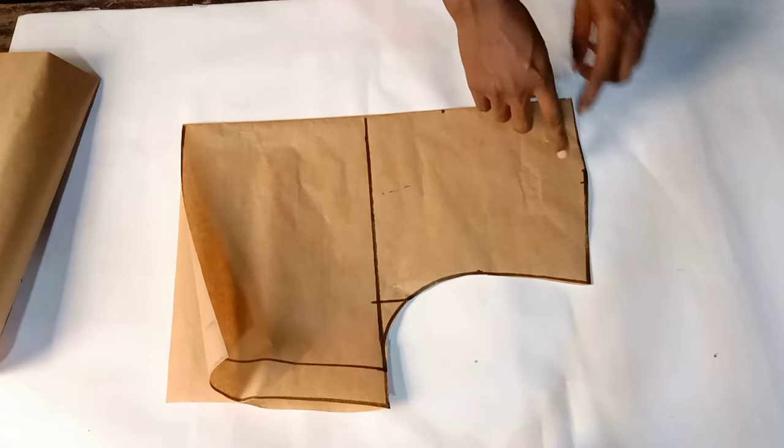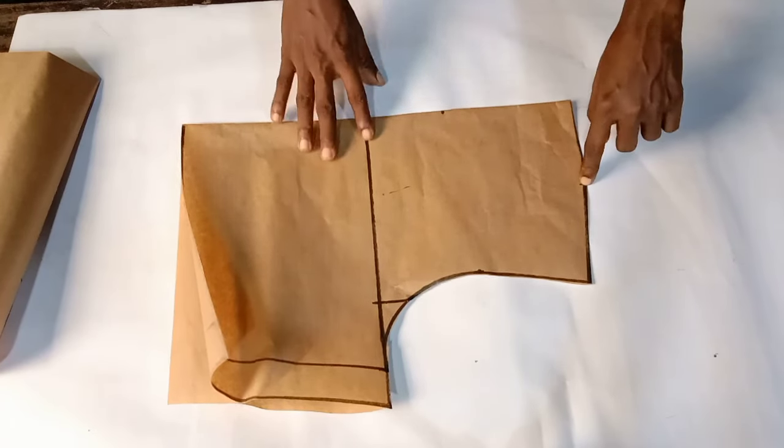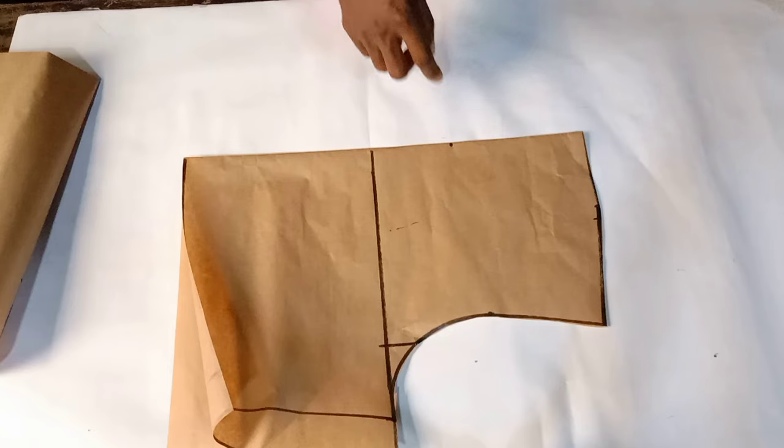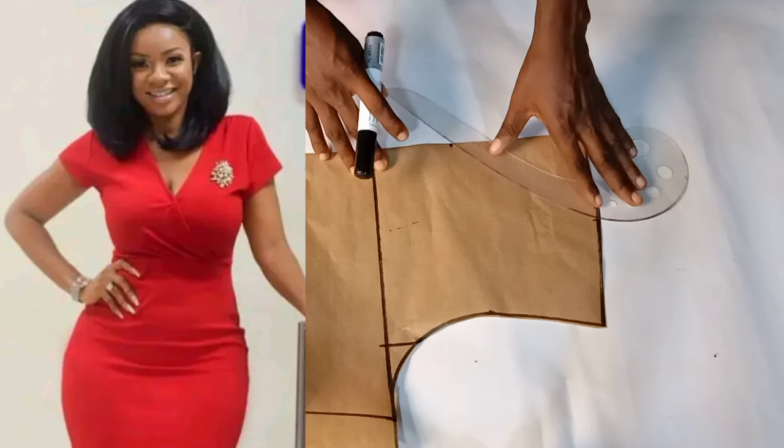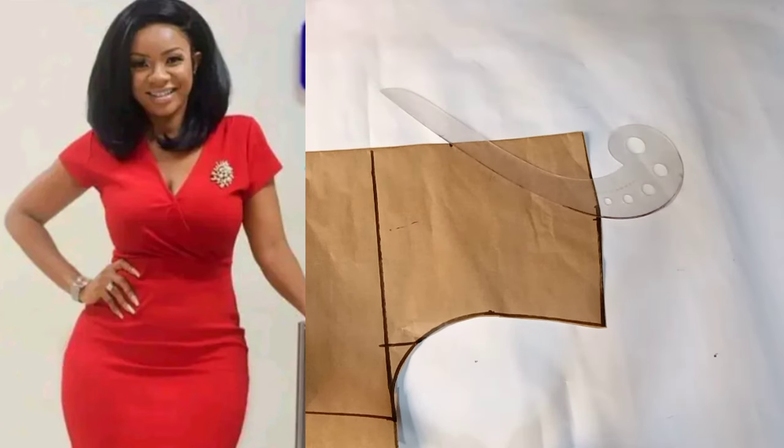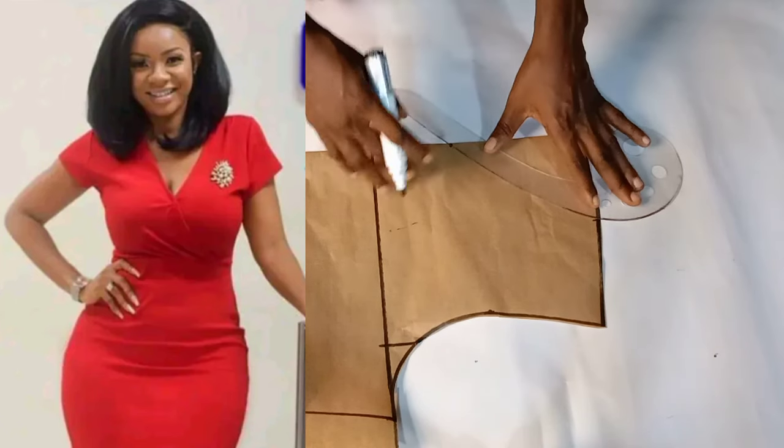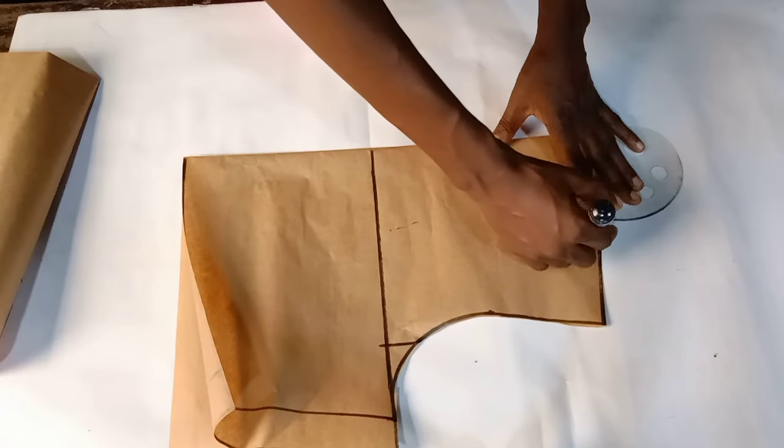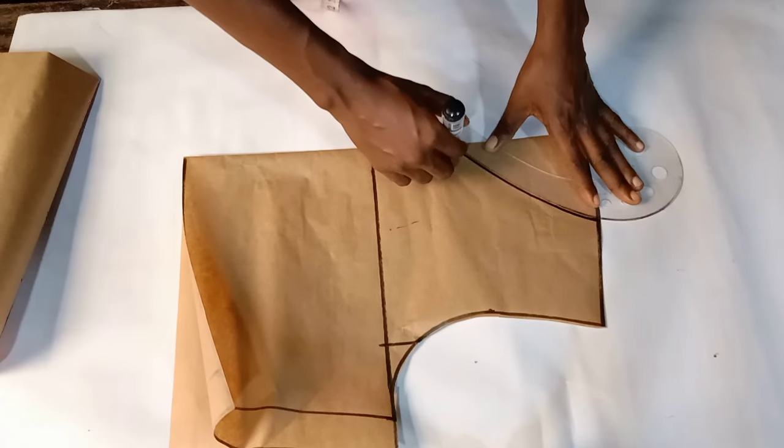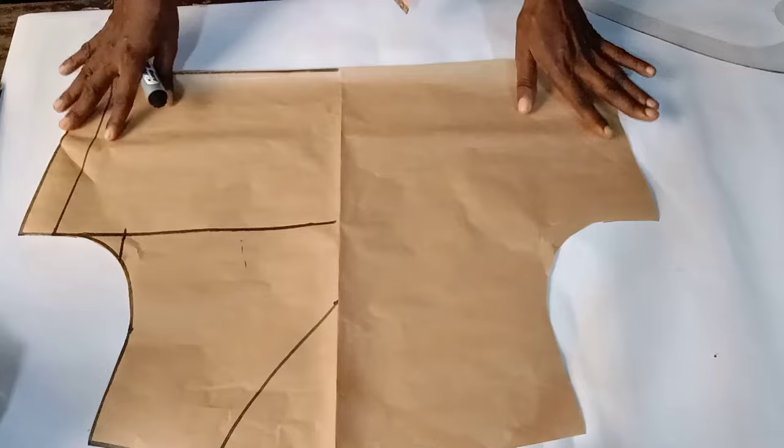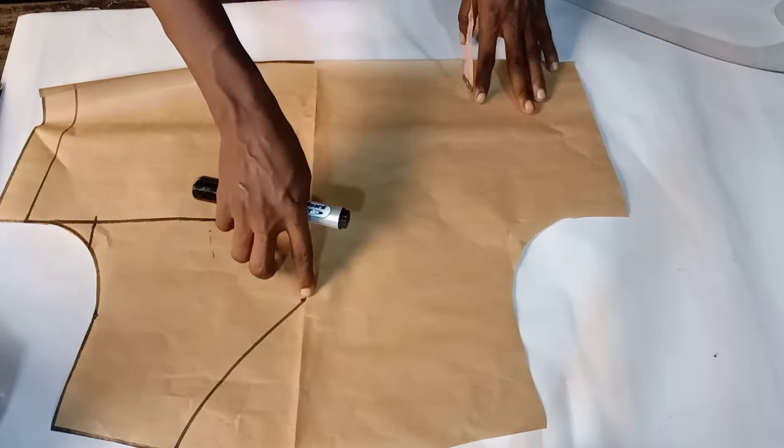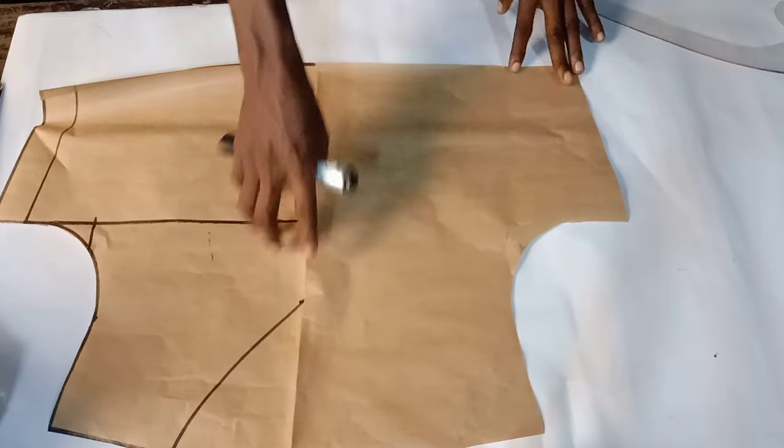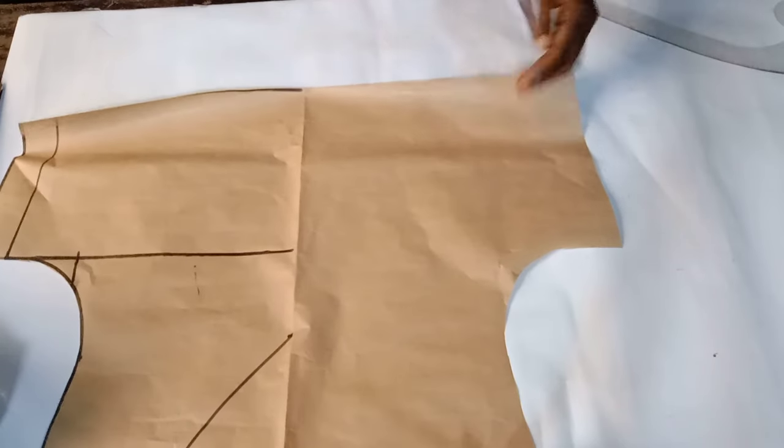So guys, this is the neck width and this is the neck depth. It will be a V neckline just like you can see in the picture. I'll connect it this way using my ham curve. So this is the midpoint of the neckline, the neck depth, so right here I will...